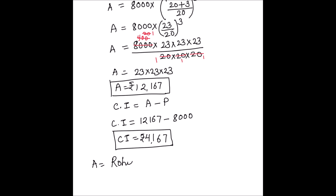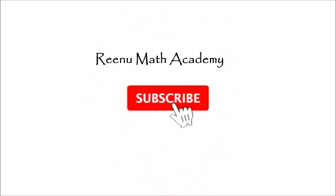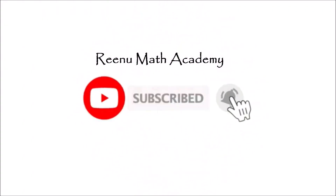So our final answer is: Rohit will get rupees 4167 as compound interest after three years. We box the answer. This is how we calculate compound interest using the formula. I hope this video is helpful. If you like the video, please hit the like button and subscribe to my channel for more math videos. Thanks for watching, bye!